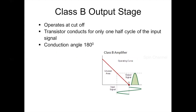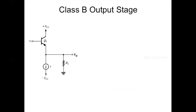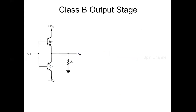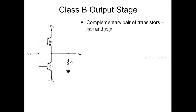However, to get the output signal for the complete cycle of the input signal, a complementary pair of transistors — an NPN and PNP transistor — are connected in such a way that both the transistors cannot conduct simultaneously.